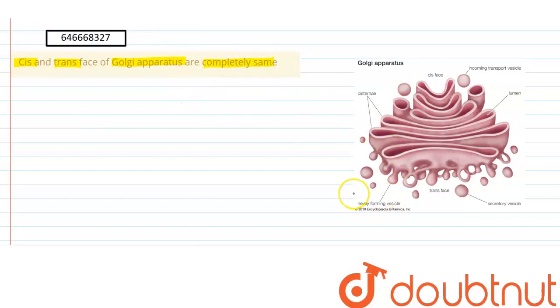Now as we can see in this given picture here, this is the cis phase of the Golgi apparatus and this is the trans phase.